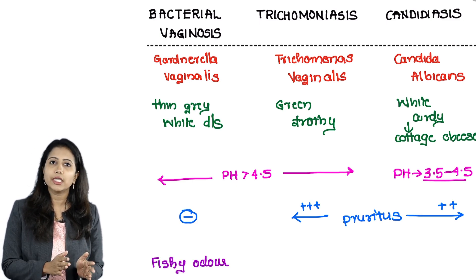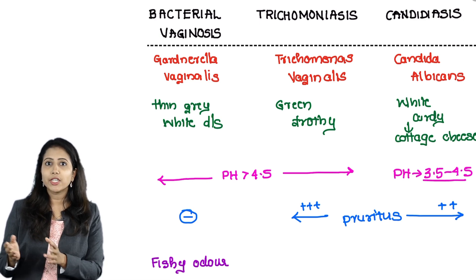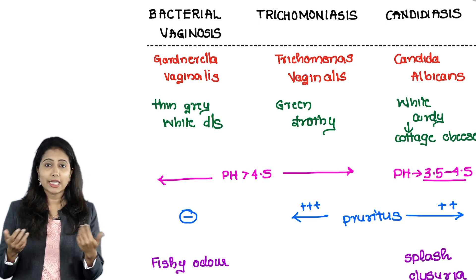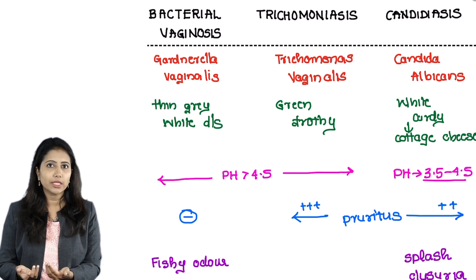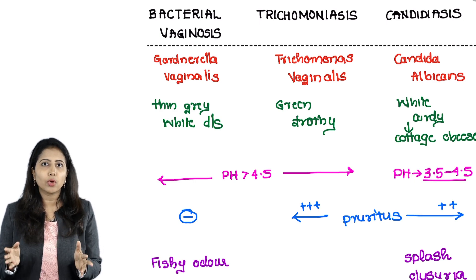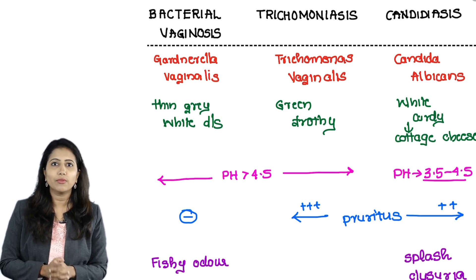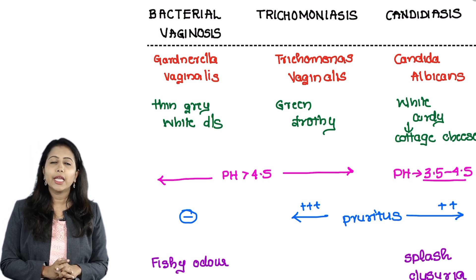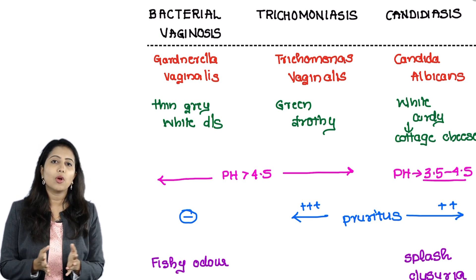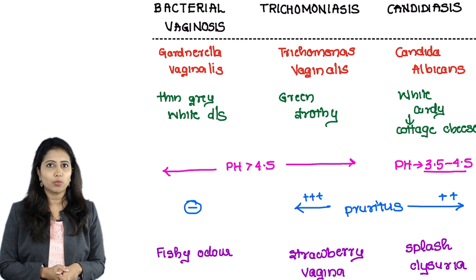The fishy odor is seen in case of bacterial vaginosis, whereas there is typical splash dysuria which can be seen in case of candidiasis. This means that as there is intense itching and pruritus there can be vulval excoriations, and once the urine splashes on these areas it could be painful — this is known as splash dysuria, seen in candidiasis. In case of trichomonas we can see the strawberry appearance of the vagina.